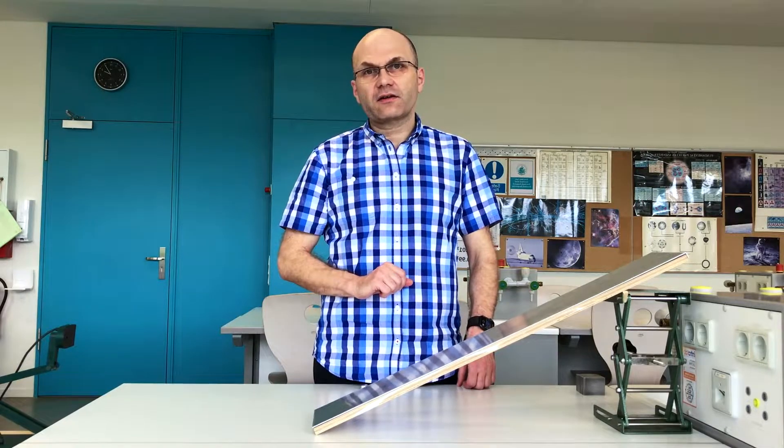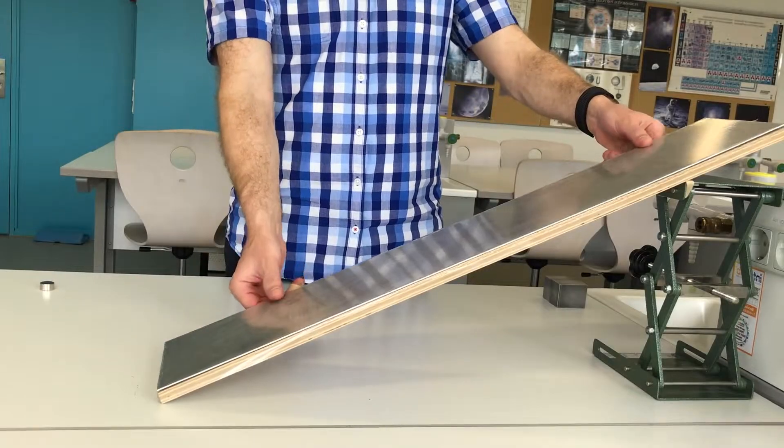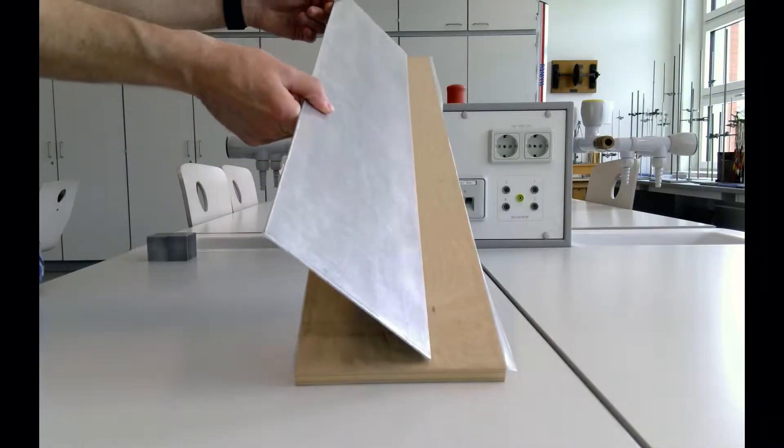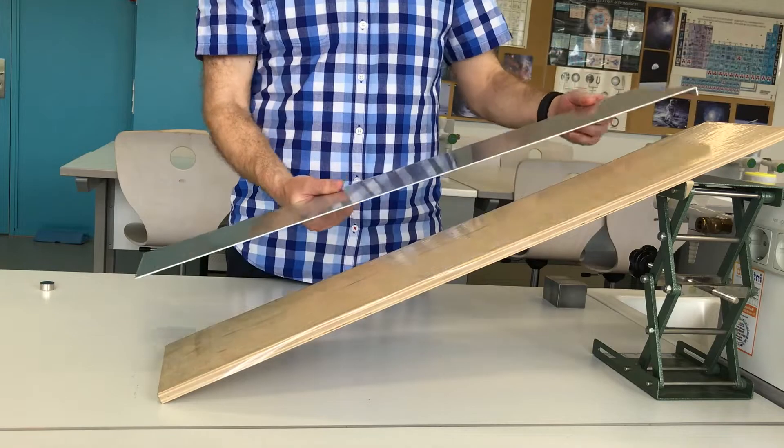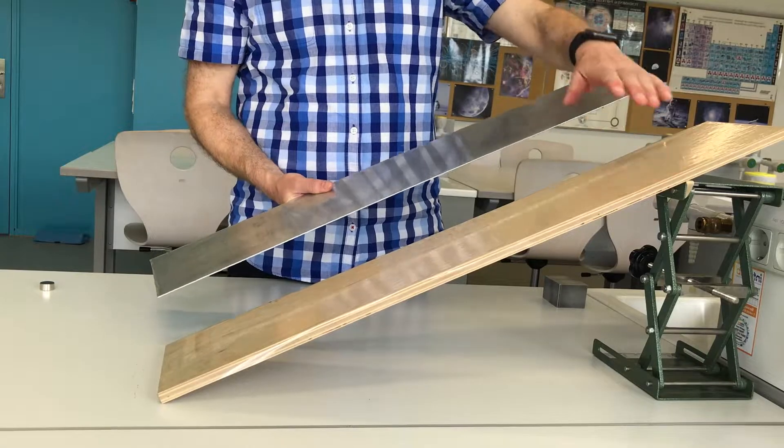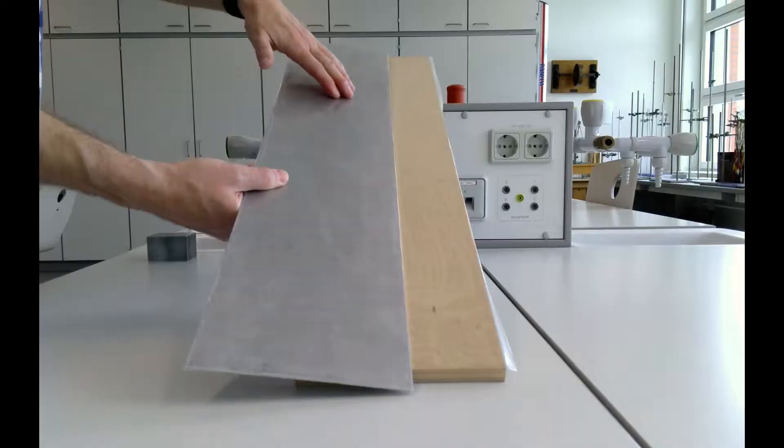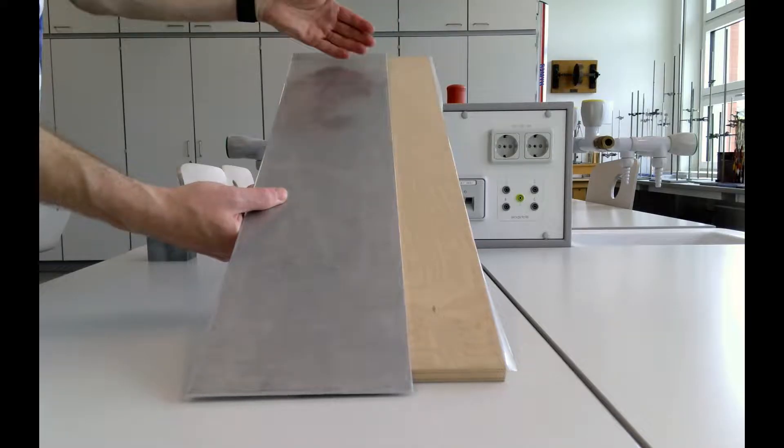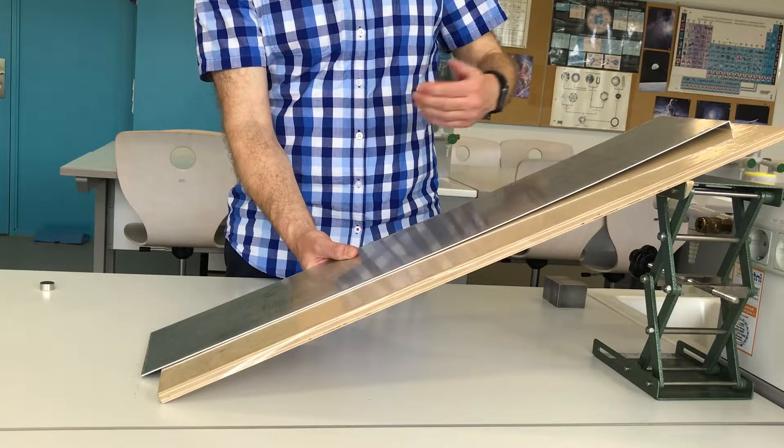The slope consists of a metal sheet, aluminum in this particular case, and a wooden plank. They are both covered with a plastic foil to have similar frictional properties when an object slides down the slope.